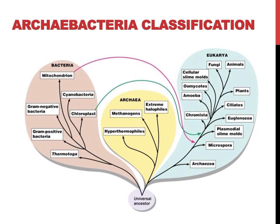Prior to this date, they were classified with all other bacteria. What's interesting is that Archea are more distantly related to other bacteria, eubacteria, as eukaryotes are to Archeobacteria, as illustrated in the phylogenetic tree on this slide. Note how Archea and Eukarya, to which humans belong, branch off together initially.